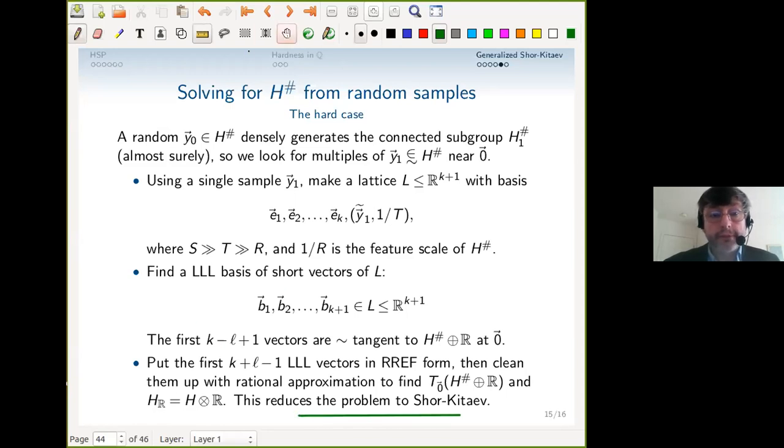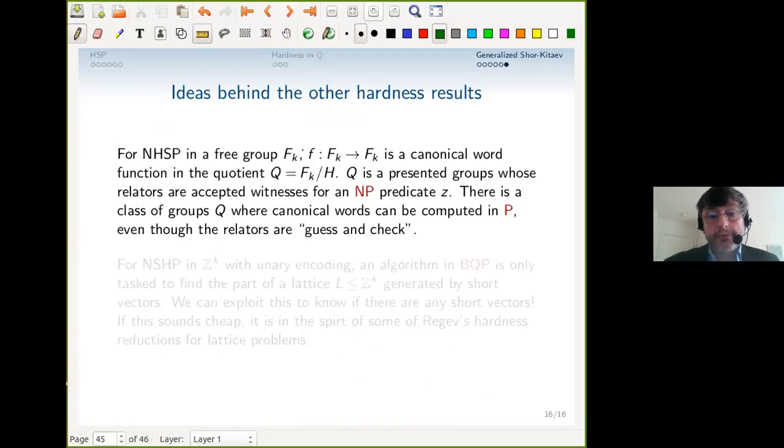Now, in my remaining minutes, let me sketch very briefly what I do for the two other hardness results, which I consider mathematically important for various reasons. It's not particularly a quantum argument in this case, but still it's a barrier to existence of a quantum algorithm. If it's NP-hard, we have the Grover lower bound. Like in the case of Q, we wanted canonical representatives. For a free group, we want canonical words relative to this normal subgroup.